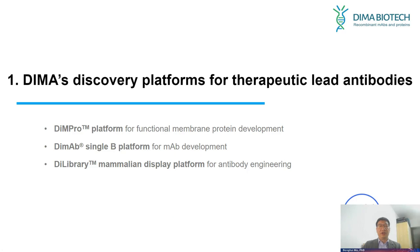We build a high-throughput assay to find the best lead hits, then use our DMAp Single B technology to clone the IgG gene. After ranking the best molecules, we choose leads for further optimization with our D Library technology for humanization and affinity maturation.